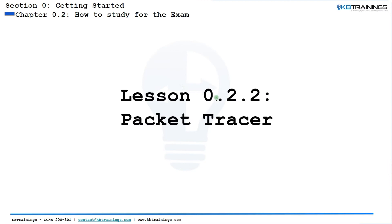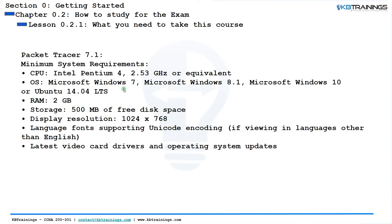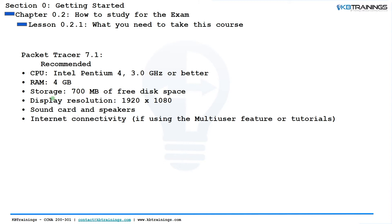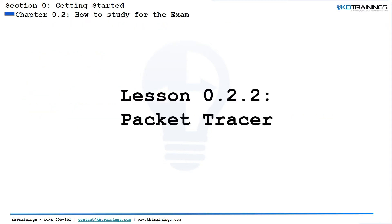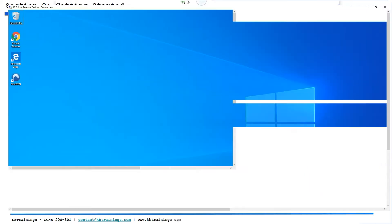Packet Tracer is perfect if you are a beginner because it's easy to install and light on your computer. In the last lesson I showed you the minimum requirements: you need at least 2 GB of RAM, with 4 GB recommended, and a decent CPU on your laptop or computer.